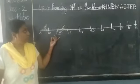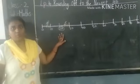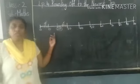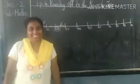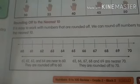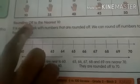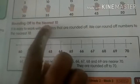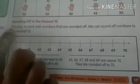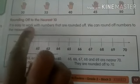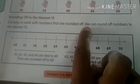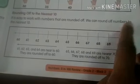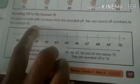Now children, after showing this board, I want you all to please open your readers page number 17. On page number 17 in your readers, rounding off to the nearest 10. It is easy to work with numbers that are rounded off. We can round off numbers to the nearest 10 children.